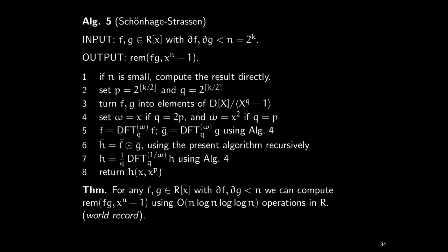This is the proof of the complexity estimate. This is a world record, and once more the remark that the mod x^n minus 1 is not a restriction — if you want to really multiply, just choose n large enough so the remainder does no harm.